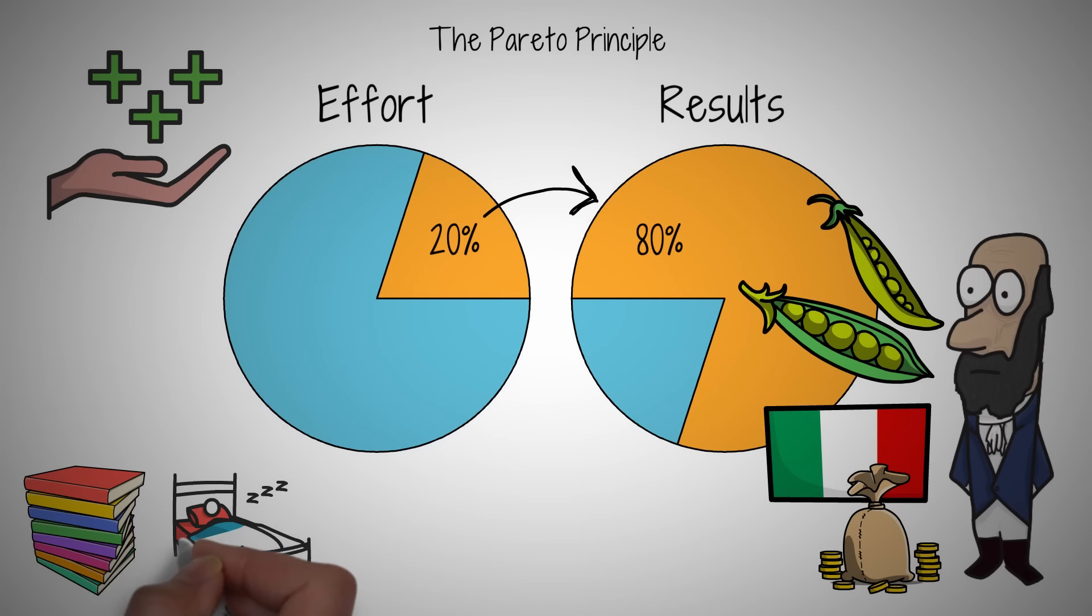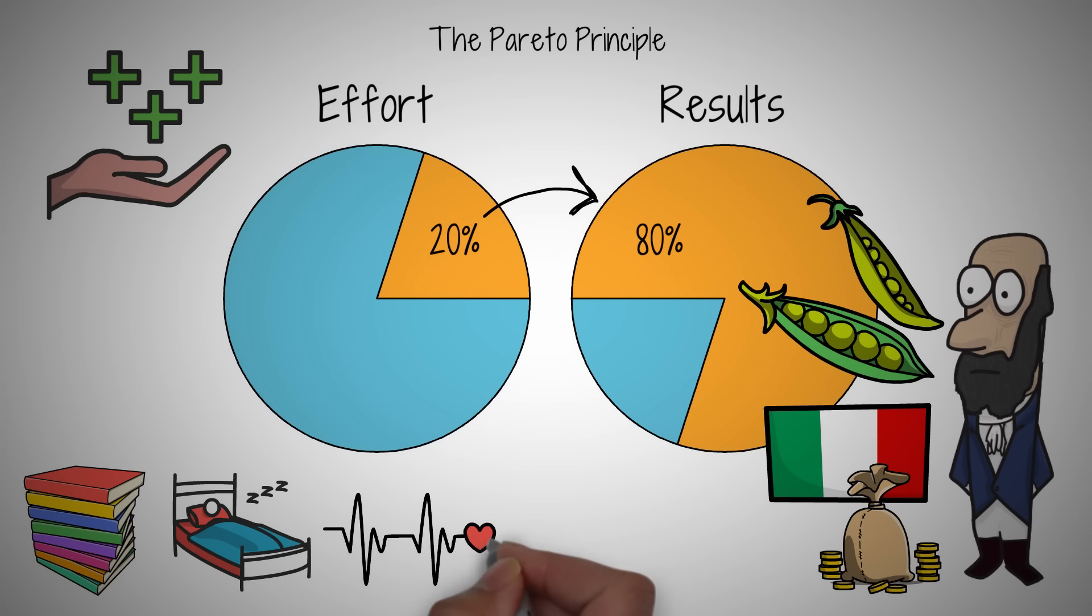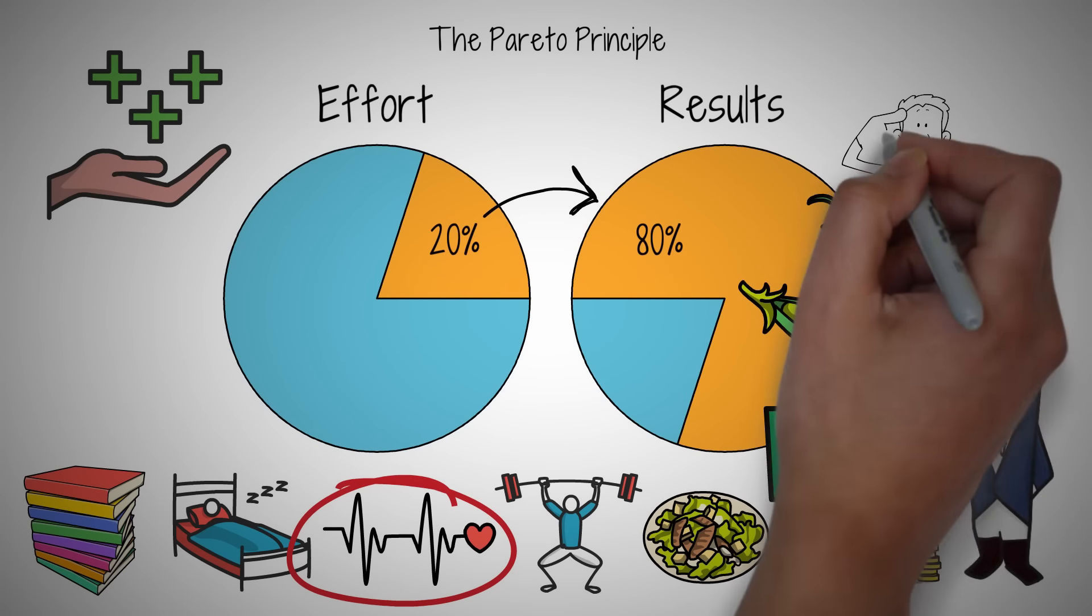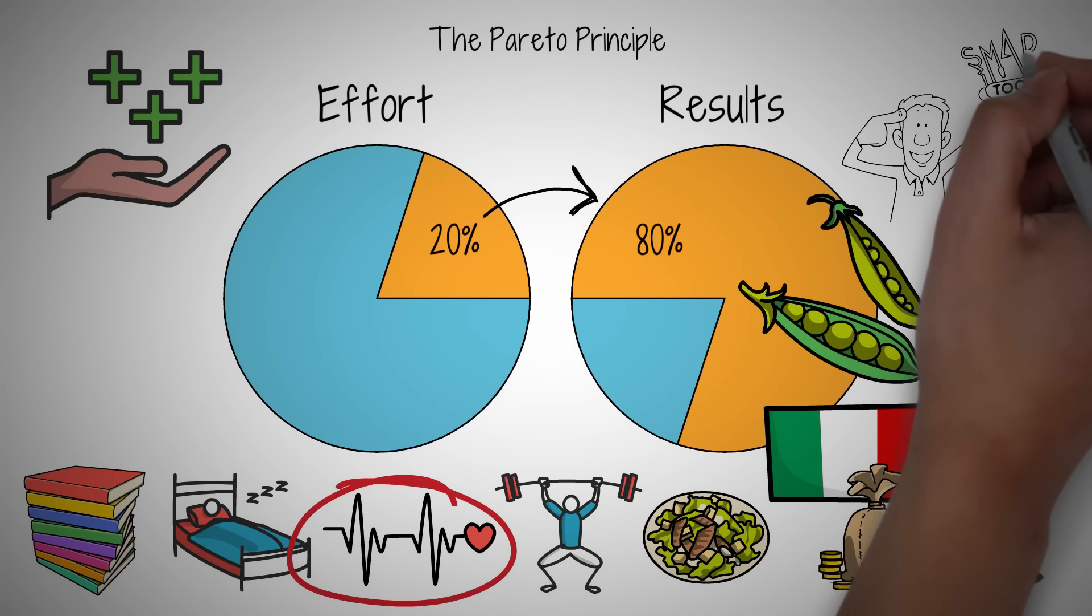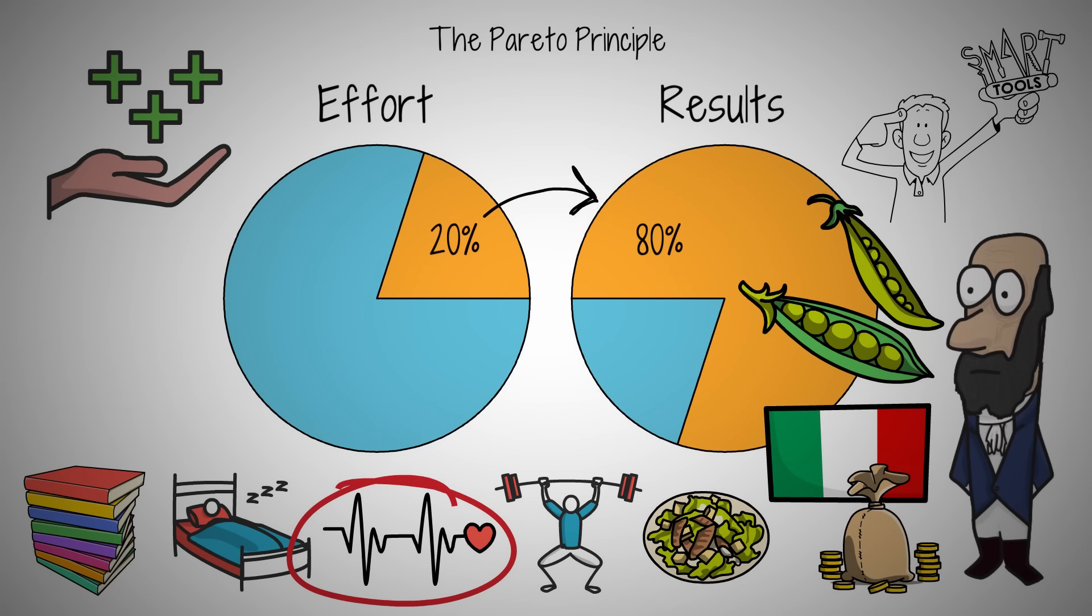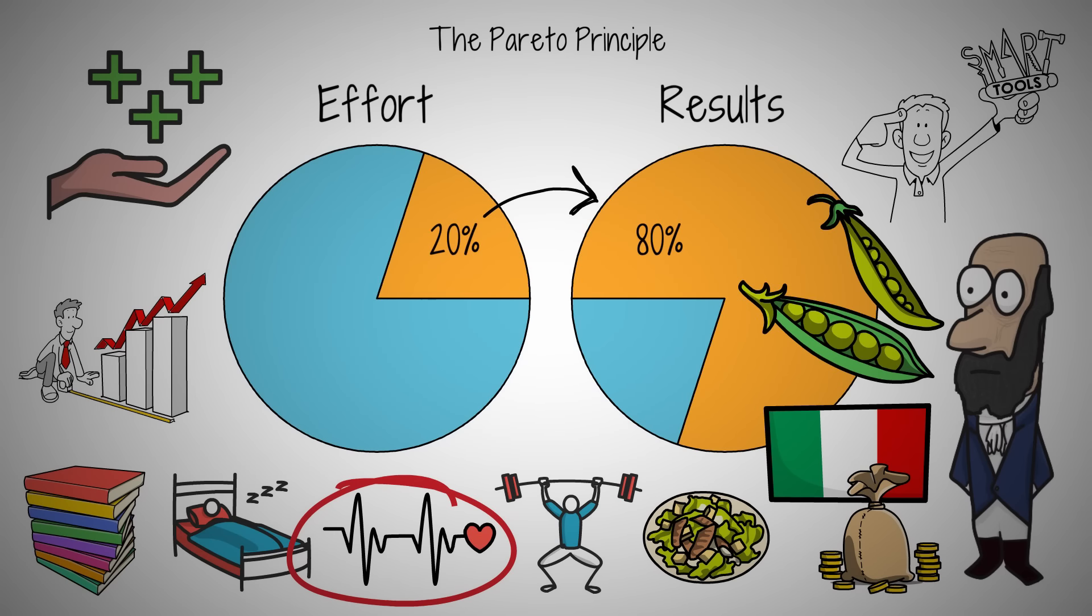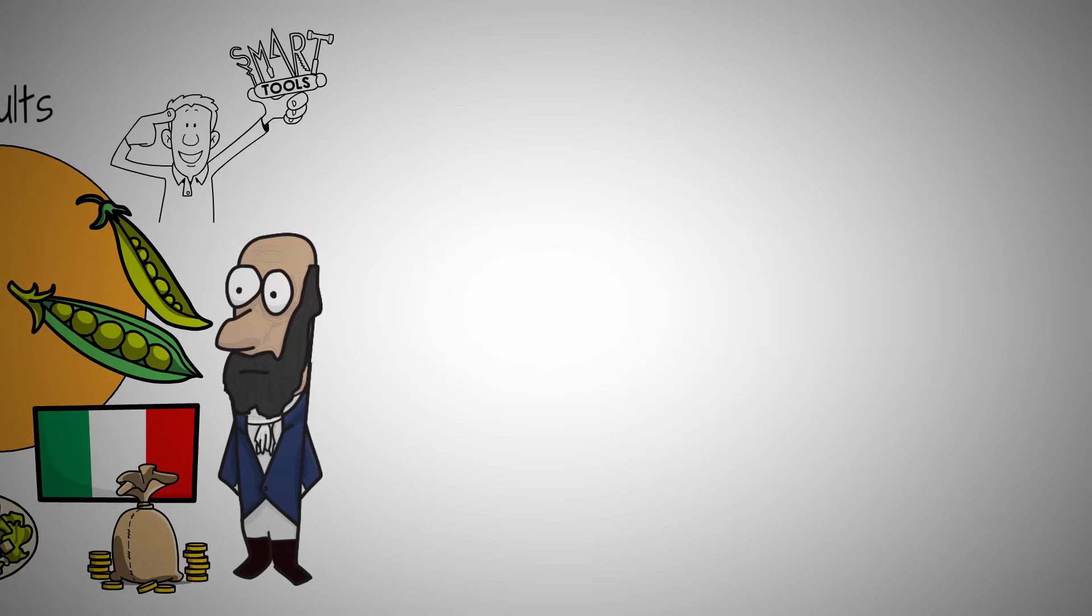Applying this to self-improvement, consider focusing on the 20% of habits or activities that will give you the most significant benefits. For instance, if you're trying to improve your health, identifying and concentrating on key exercises and dietary changes can yield most of the benefits. By embracing the Pareto Principle, you're not just working harder, you're working smarter, optimizing your efforts for maximum impact. Imagine the possibilities when you apply this to all areas of your life.